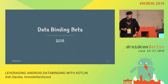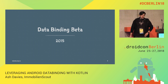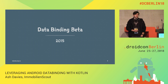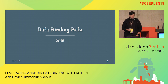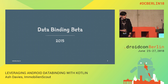It started off with data binding beta in 2015 when Google announced it after I/O. It's a support library that can be used right back down to Android 2.1, which is API version 7, to write declarative layouts and minimize the glue code required to use your application logic and layouts.